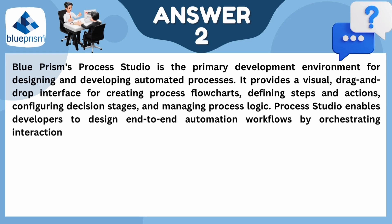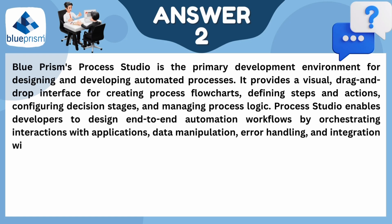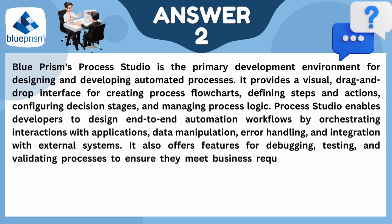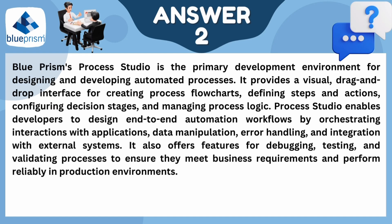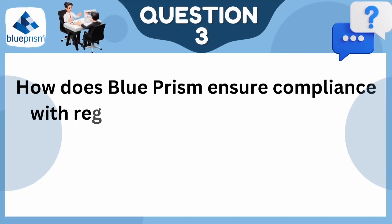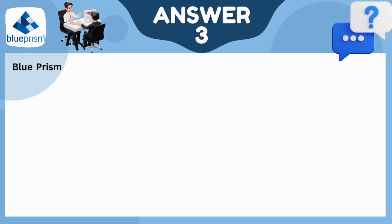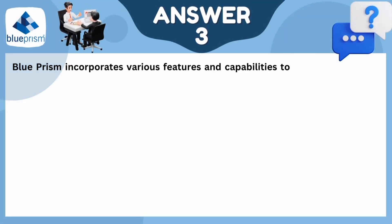Process Studio orchestrates interaction with applications, data manipulation, error handling, and integration with external systems. It also offers features for debugging, testing, and validating processes to ensure they meet business requirements and perform reliably in production environments. The next question touches on how Blue Prism ensures compliance with regulatory requirements such as GDPR or HIPAA in automated processes.